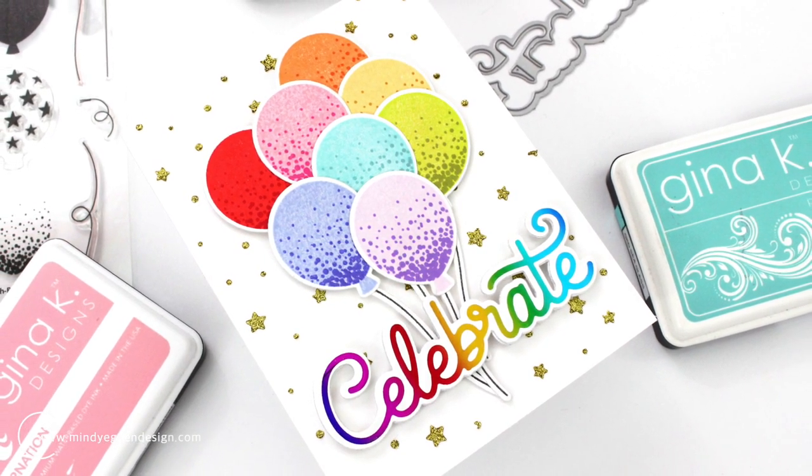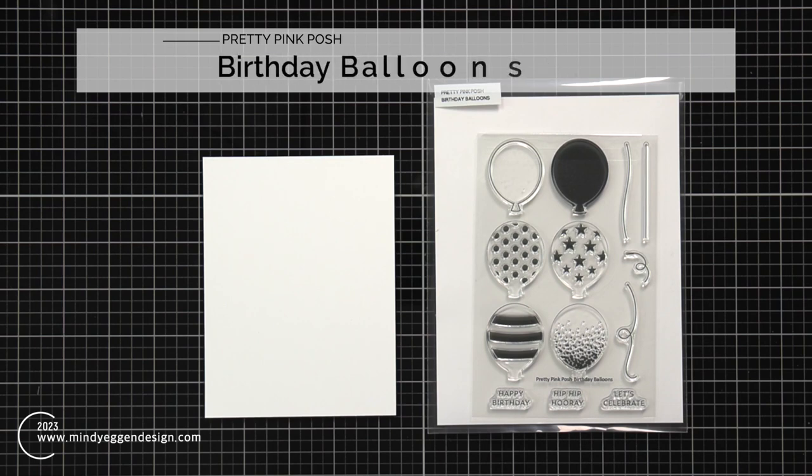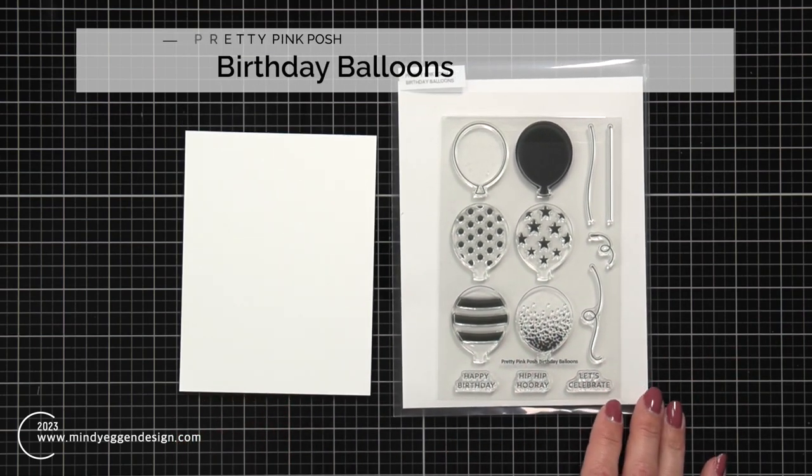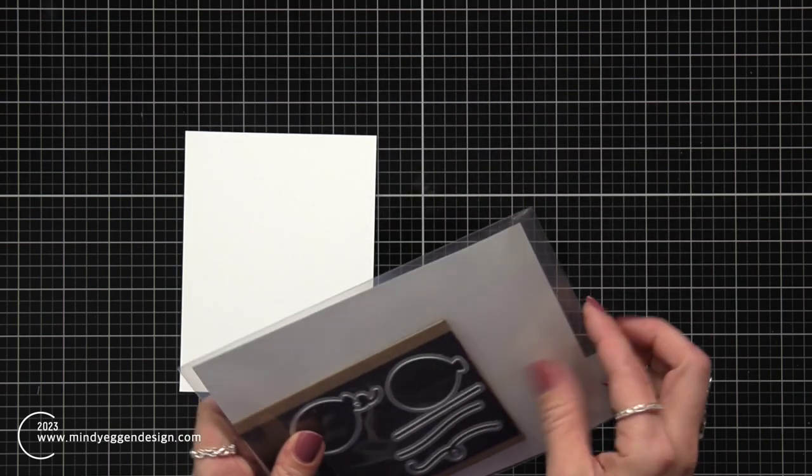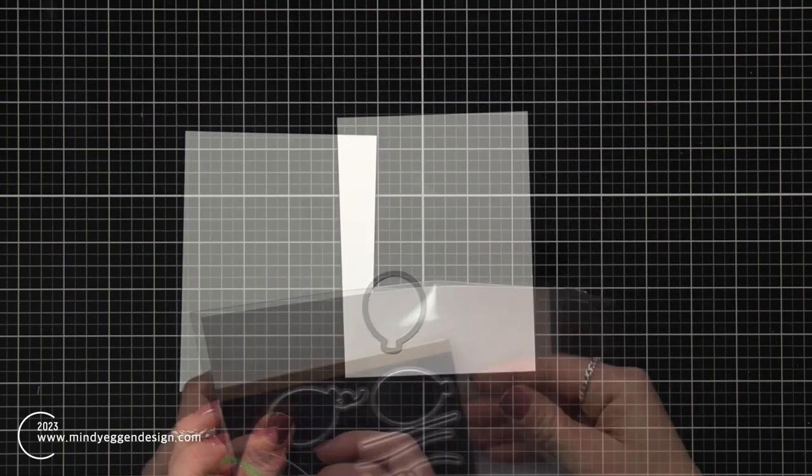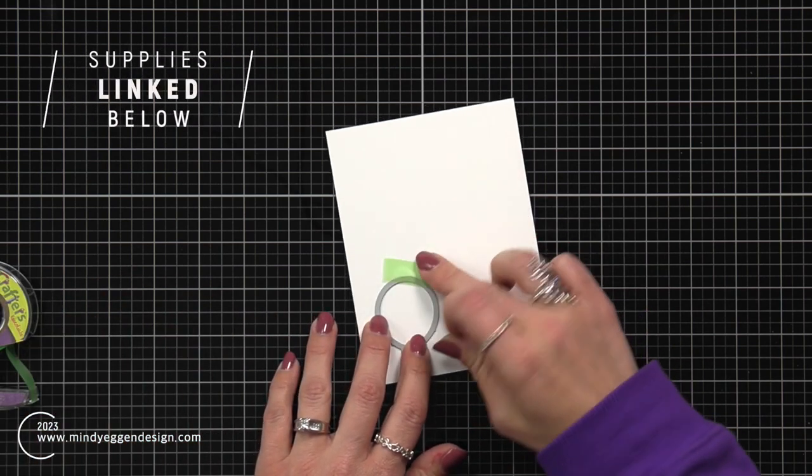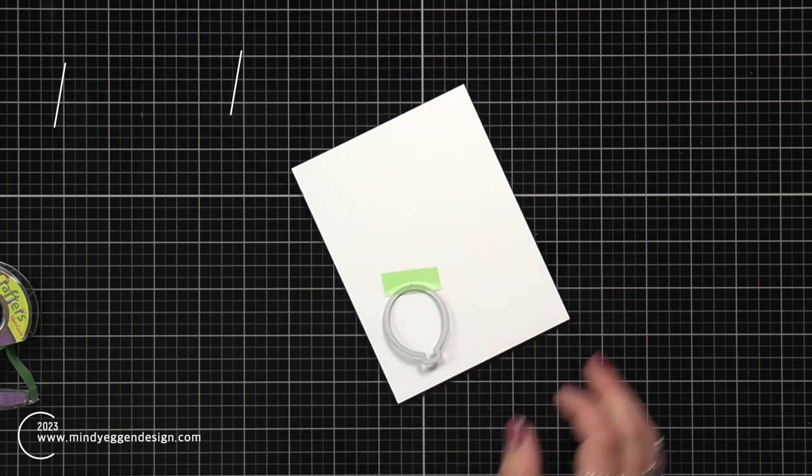So the set that I'm using today is this Birthday Balloons from Pretty Pink Posh and my idea was to create this big assortment of balloons so that means I'm going to need to stamp images multiple times. And the best way I found to do that was to take some white cardstock and just die cut out a bunch of these balloons.